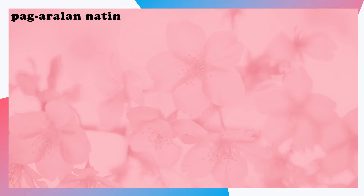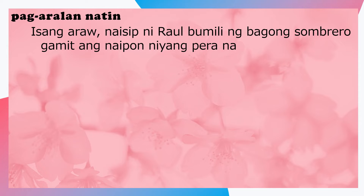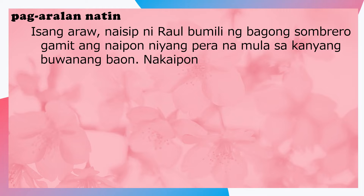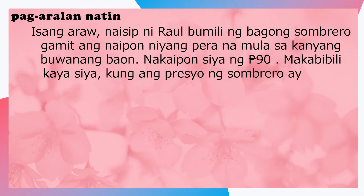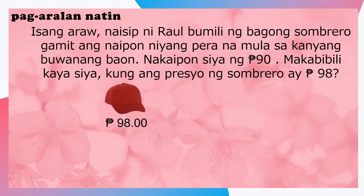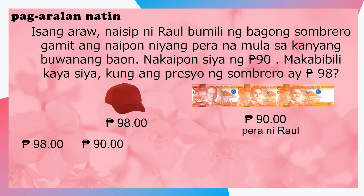Ating pag-aralan. Isang araw, naisip ni Raul bumili ng bagong sumbrero gamit ang naipon niyang pera na mula sa kanyang buwanang baon. Nakaipon siya ng siyam napong piso. Makabibili kaya siya kung ang presyo ng sumbrero ay siyam napot walong piso? At ang pera ni Raul ay siyam napong piso.